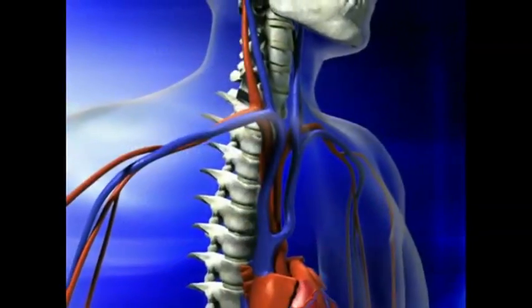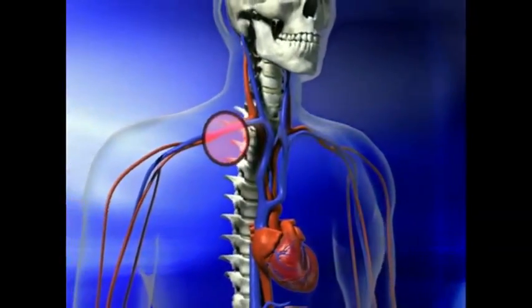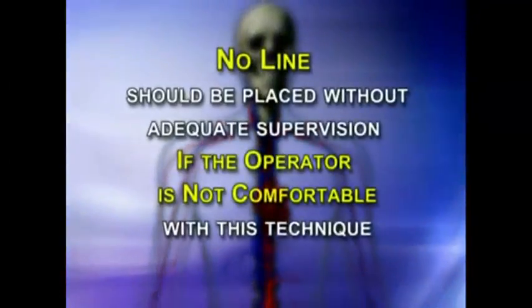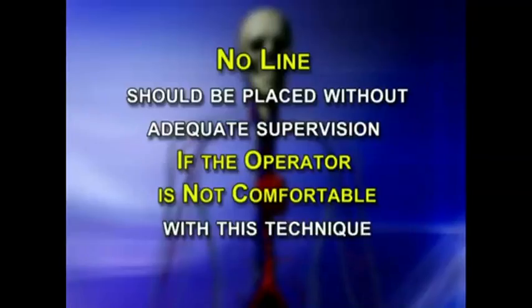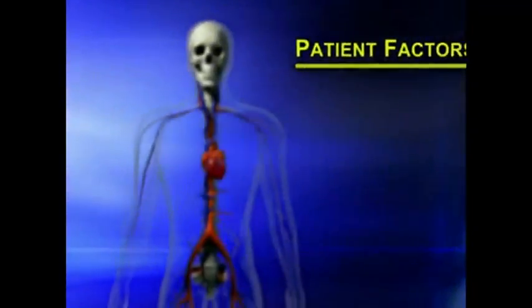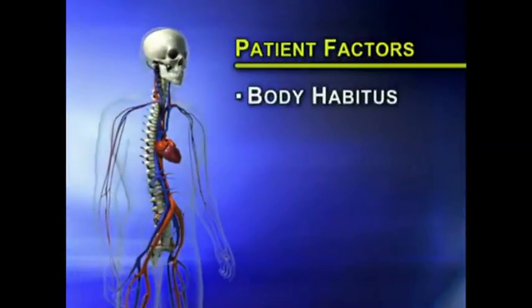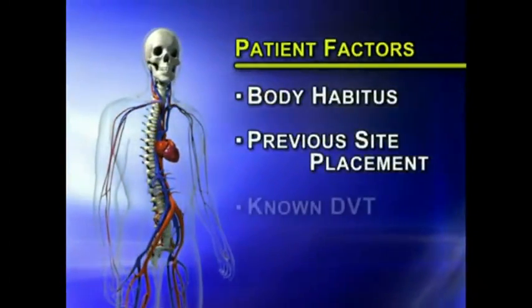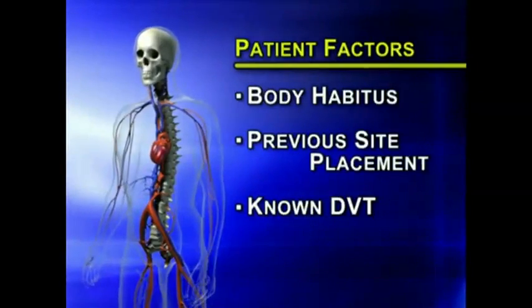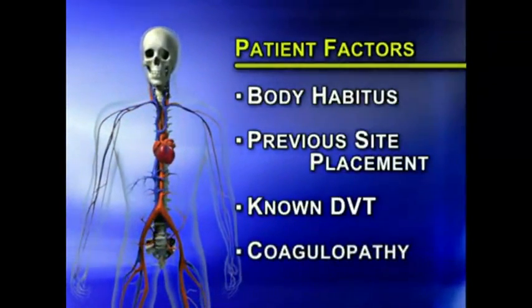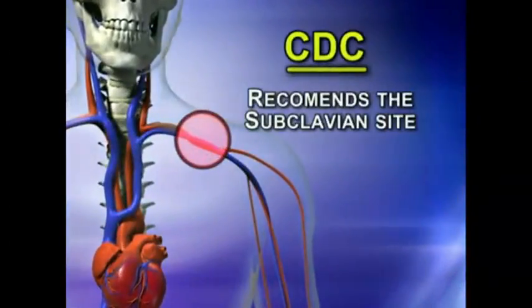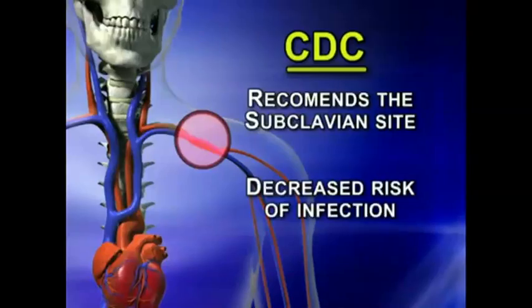Determining the insertion site must take into account several important aspects of the operator and the patient. No line should be placed without adequate supervision if the operator is not comfortable with the technique. Patient factors such as body habitus, previous site placement, or known DVT may also influence the insertion site. Coagulopathy must always be considered. The CDC recommends the subclavian site for insertion because of its decreased risk for infection.